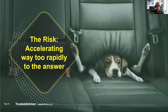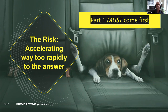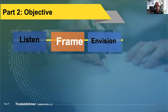The risk we all share as professionals is accelerating way too fast to the answer — we're in a hurry to get there. Remember, Part 1 has to come first. The logic is simply basic human dynamics: if we're emotional about something, we tend to get stuck on it and don't want to proceed past it until it's resolved or at least acknowledged. That's the logic for Part 1.